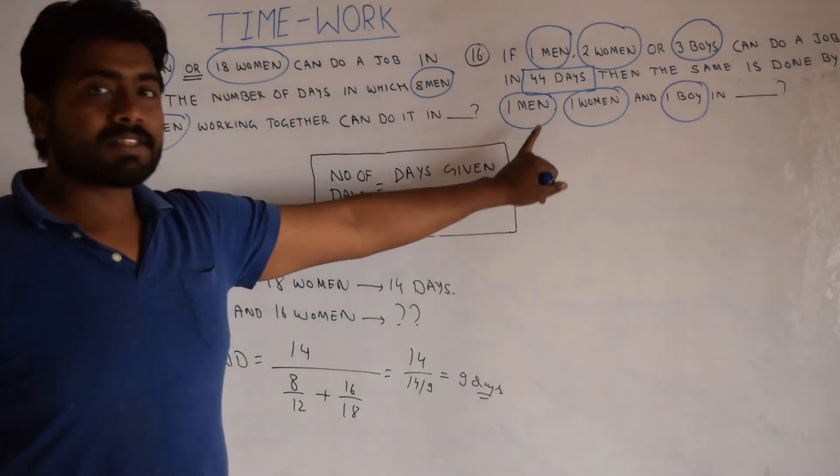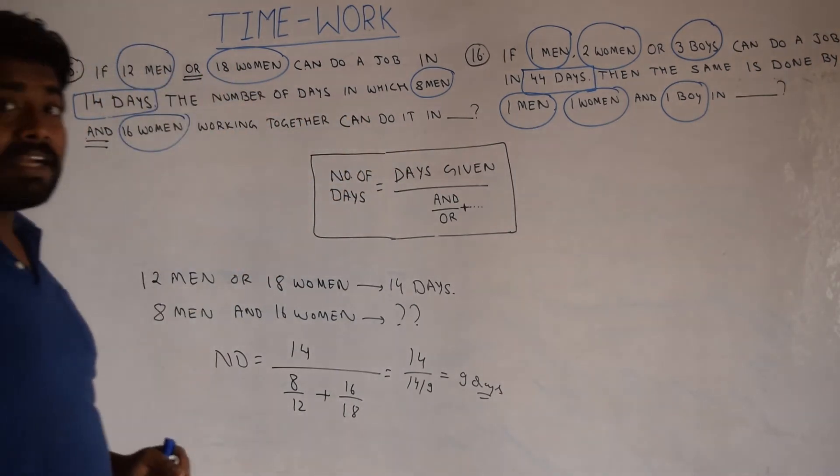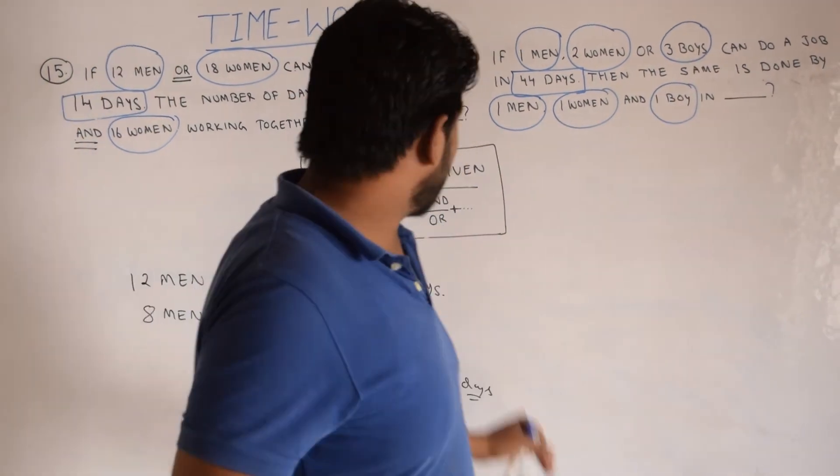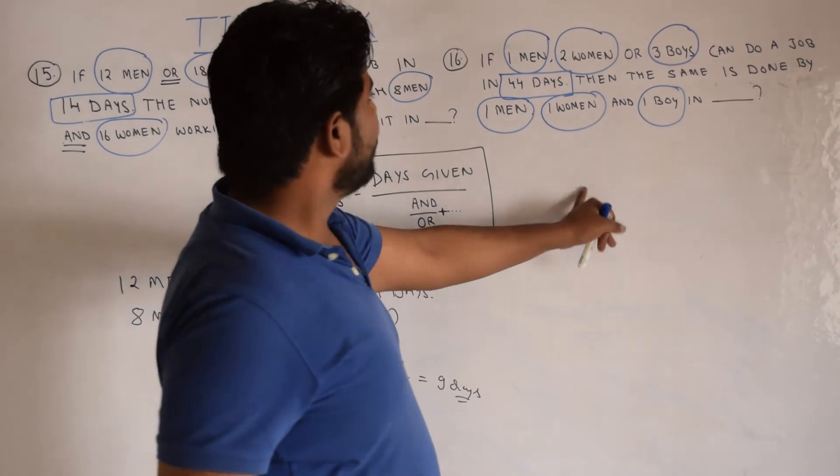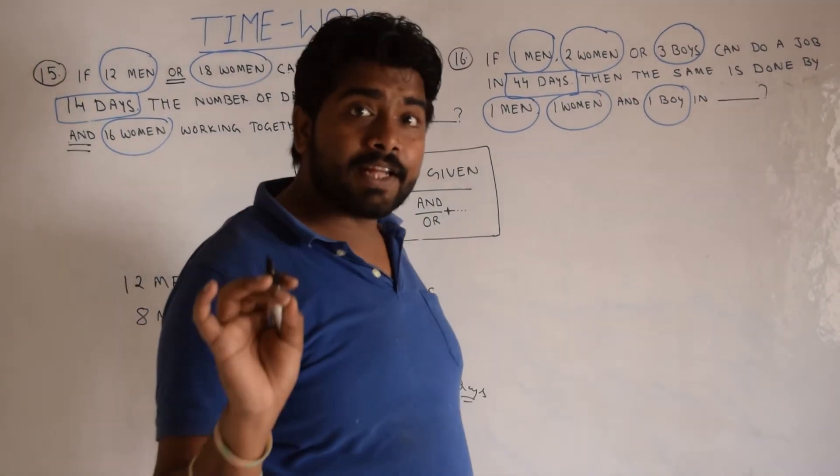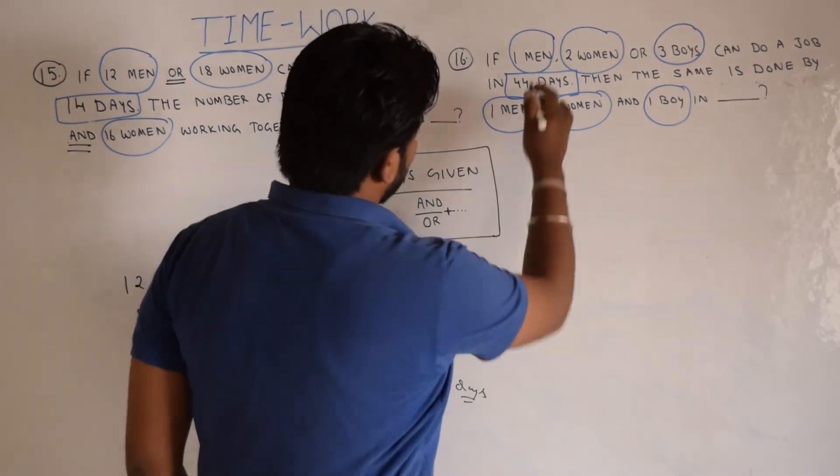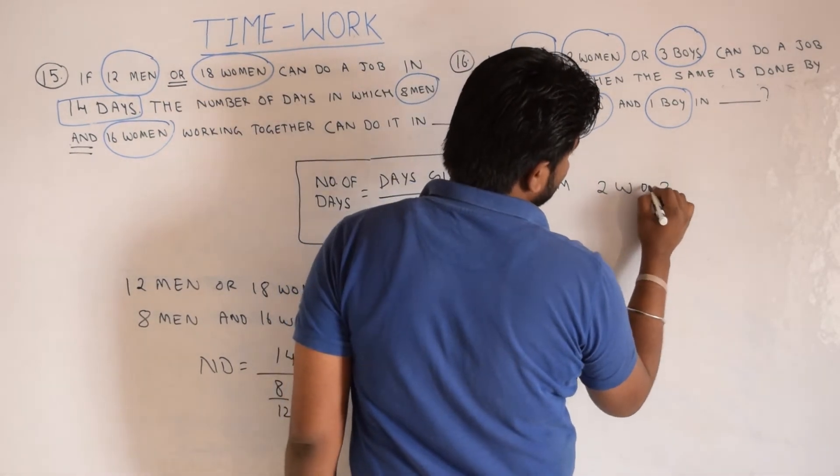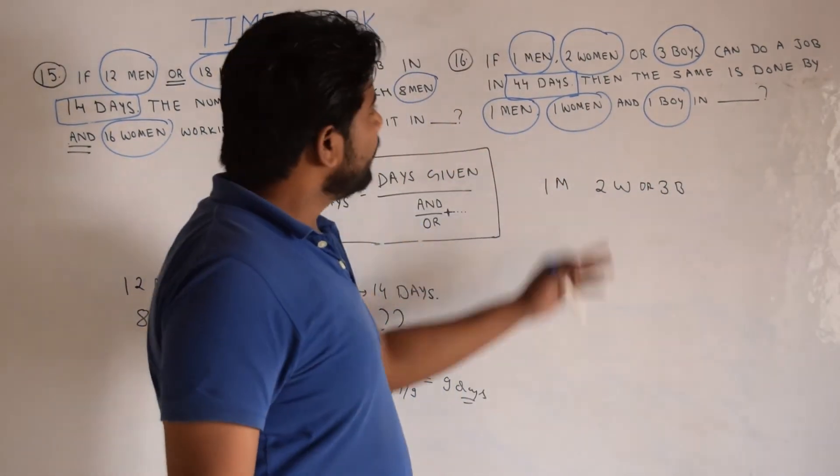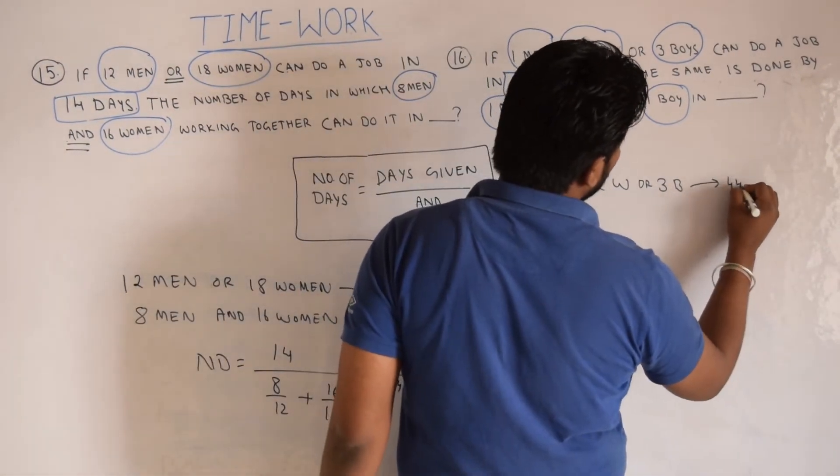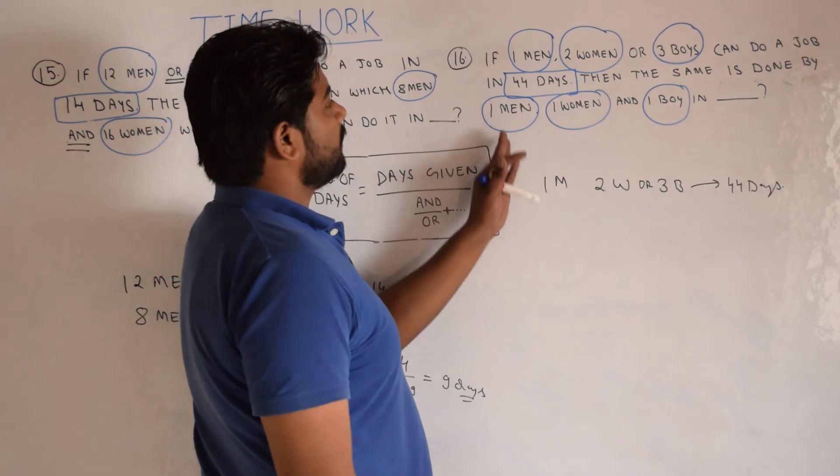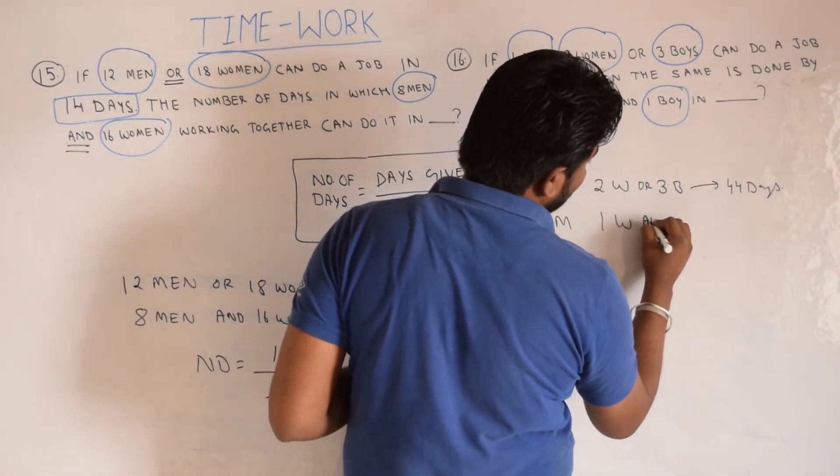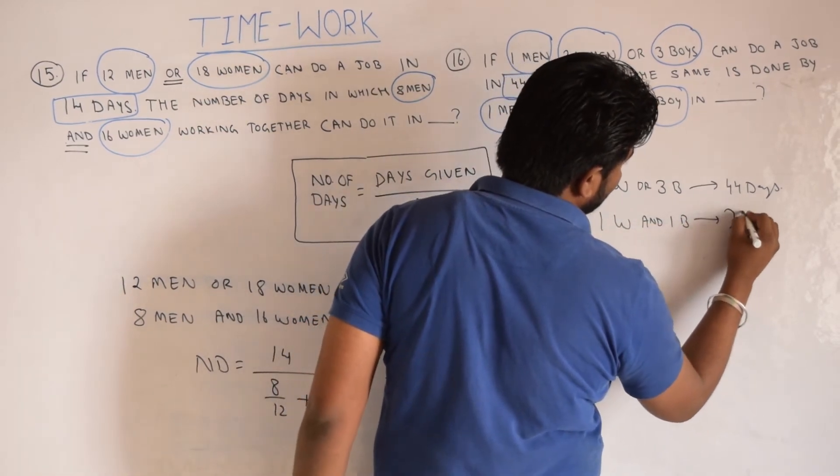In this question, similar question. The difference is men or women, there were 2 entities. Here we have men, women and boys. We have 3 entities. Formula, same formula we will be using in this question as well. First, what's the information given in the question? We write it as it is. What's given? One man, 2 women OR 3 boys. They complete the work in 44 days. Next, one man, one woman and one boy completes the work in how many days?